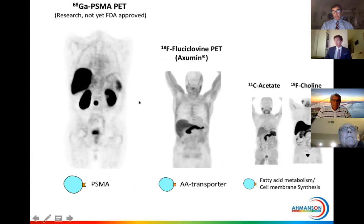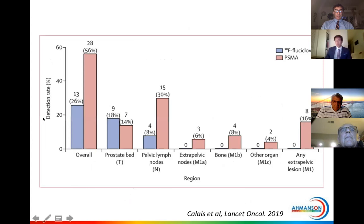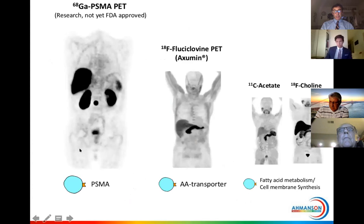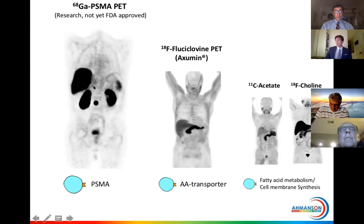We have different tracers available for prostate cancer imaging, and they all target different structures on the prostate cancer cells. The one currently having a lot of press is PSMA — the structure on the prostate cancer cell is called Prostate-Specific Membranous Antigen. The tracer images the expression of this target, which is present on most prostate cancer cells.